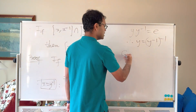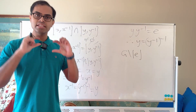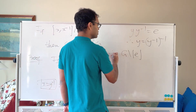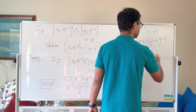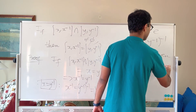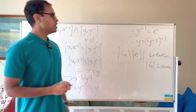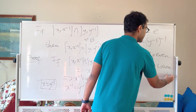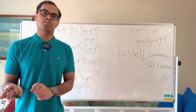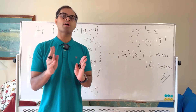Now we're done, because we've partitioned G minus the identity into disjoint two-element sets. Therefore this set has even cardinality. But we know the cardinality of G is even, so the cardinality of G minus the identity is odd — one less than an even number. That's a contradiction. So there must exist an element which equals its own inverse and is not the identity.